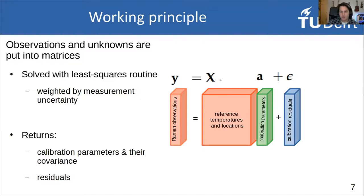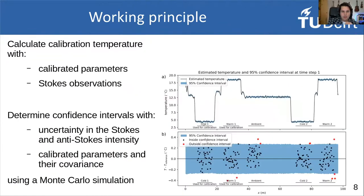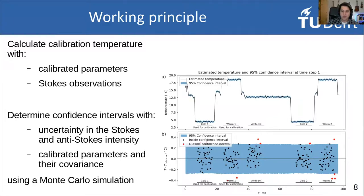These are big 3D matrices containing all information in space and time for all reference sections. We then calculate the calibrated temperature using the derived parameters and all Stokes observations along the entire cable in time. We calculate the confidence intervals using the uncertainty in the Stokes and anti-Stokes measurements and the calibrated parameters' covariance. We use a Monte Carlo simulation to make a distribution of all this, and from those statistics we can derive, for example, a 95% confidence interval.